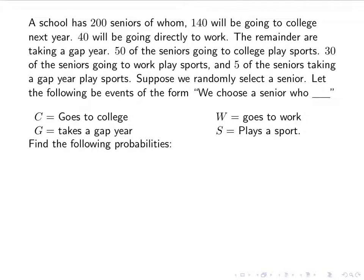Let's try another example. A school has 200 seniors, of whom 140 will go to college, 40 will go directly to work, and the remainder are taking a gap year. 50 of the seniors going to college play sports, 30 going to work play sports, and 5 taking a gap year play sports. We randomly select a senior. Let C = goes to college, G = takes a gap year, W = goes to work, and S = plays a sport.